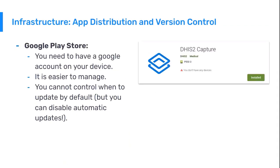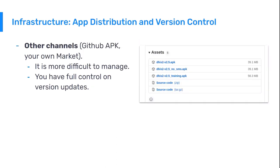There are several options to make the app available on your devices. The first and most common one is to download the application from the Google Play Store, which most users will know how to perform with very basic guidance. However, this might not be available in countries where Google is blocked or on devices without a Google account. It is important to note that if users download the app, they are recommended to disable automatic updates so implementers can test new versions before they reach the field. Another option is via other markets like GitHub, or an alternative market where you fully control the release period.